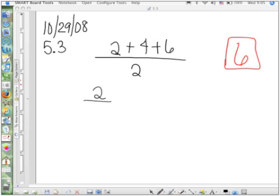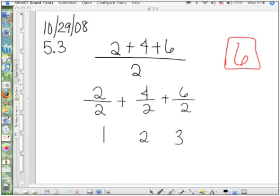Each one of those terms is being divided by 2. If I take the three terms and divide each one of them by 2, tell me, Parker, what do I get now? 6. Because 2 divided by 2 is 1, 4 divided by 2 is 2, and 6 divided by 2 is 3. And now I have the correct answer.